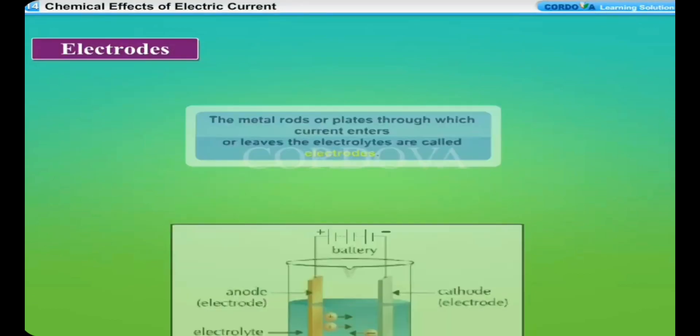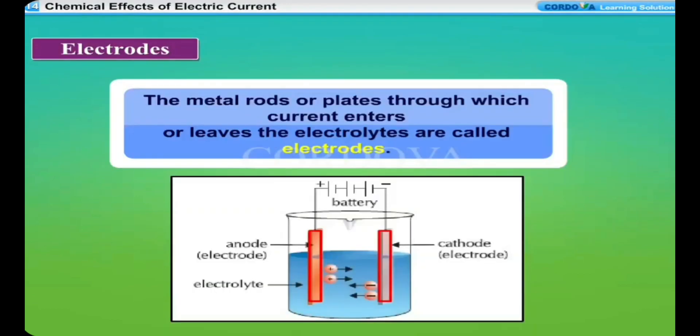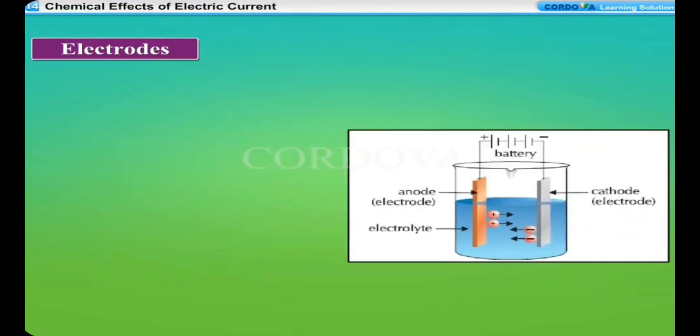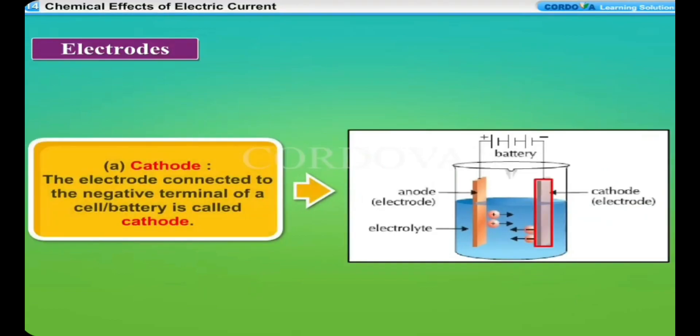Electrodes: The metal rods or plates through which current enters or leaves the electrolyte are called electrodes. They are of two kinds. Cathode: The electrode connected to the negative terminal of a cell or battery is called cathode. During electrolysis, the positively charged ions (cations) present in the electrolyte move towards the cathode.